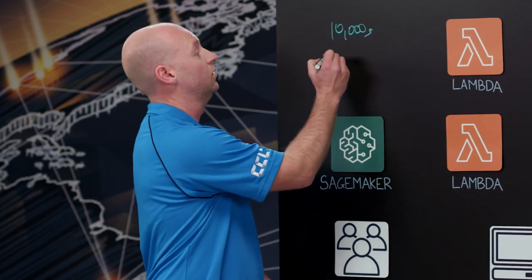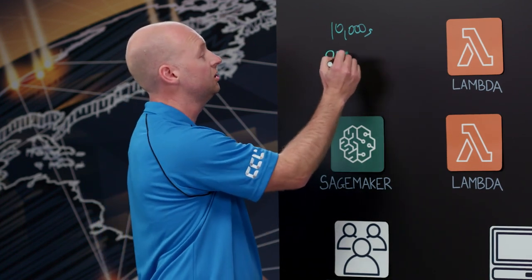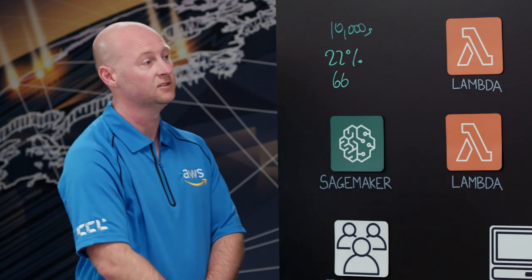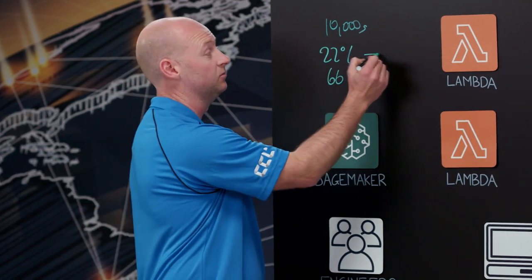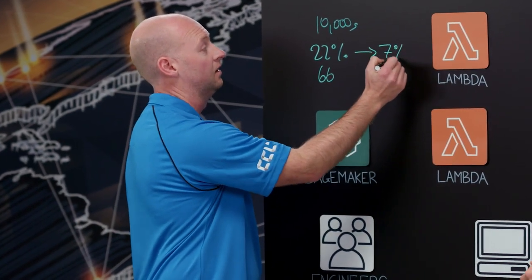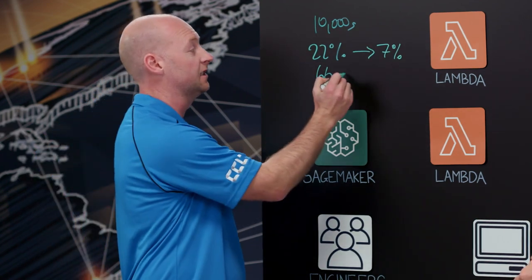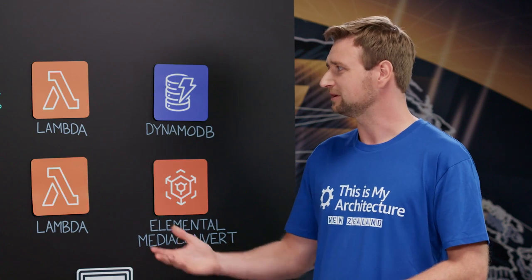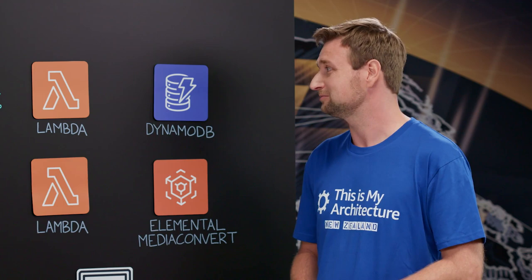And what we did, we measured how dangerous it was for them. So there was a 22% chance of a near miss — that's almost having an accident — doing it manually. And it was taking them around about 66 days. We've fully automated this process using machine learning, and we've got that 22% down to 7%. We've also reduced the time it takes them from 66 days down to 7 days.